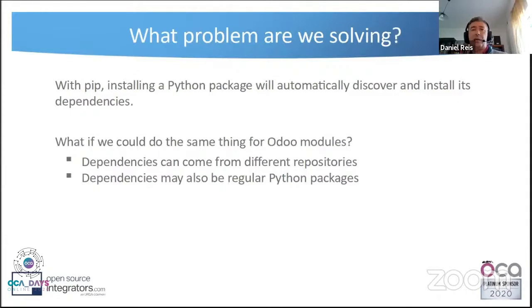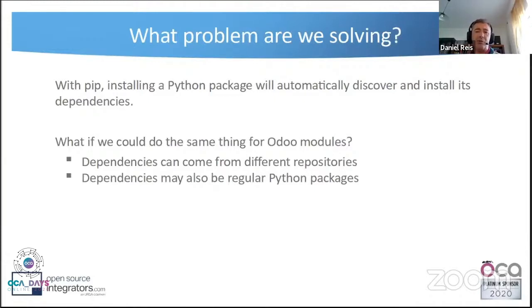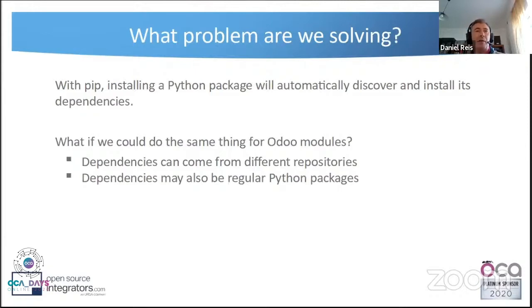Pip is the tool you ask to install a package. It can find it locally or search in the online index PyPI. It automatically downloads that package, finds the dependencies, downloads the dependencies of the dependencies, and you get everything you need in your system. Wouldn't it be great if we could do the same thing with Odoo?